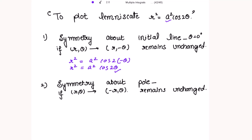Second: symmetry about the pole, where r = 0. In polar coordinates, the pole is the origin point (r = 0). Symmetry about the pole means if I have a curve forming one petal, I can rotate that petal to the other side to get a mirrored copy — that is what symmetry about the pole means.